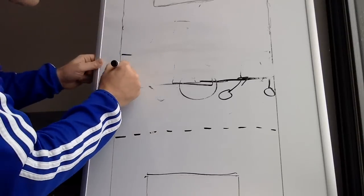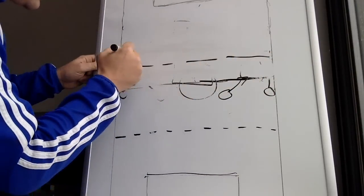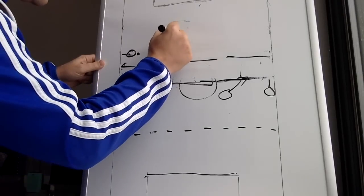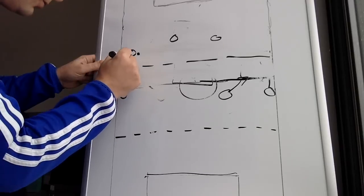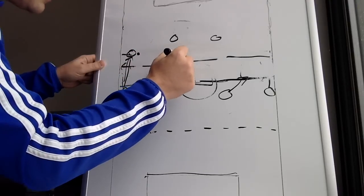If we establish a line of confrontation, if the other team's wingback is here, center back, center back, we don't stop at the line. Two to three players will go and cross that line.